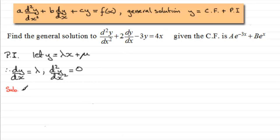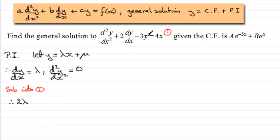We substitute these values into our original equation, which I'll call equation one. d²y/dx² is zero so I can leave that out. Then we have two times dy/dx, which gives us 2 lambda, and then minus 3y, so minus 3 times (lambda x plus mu), equals 4x.